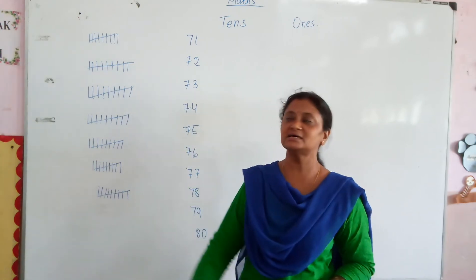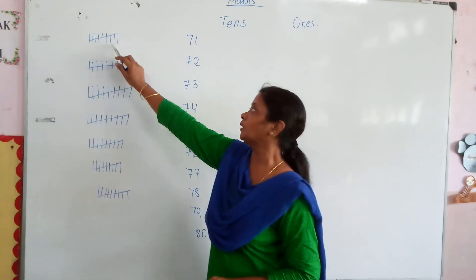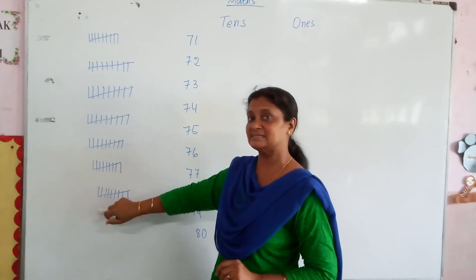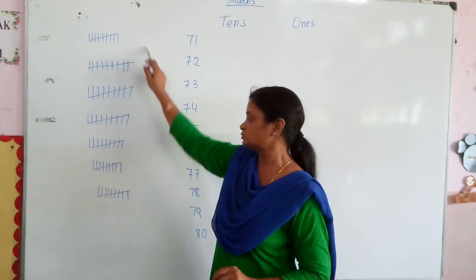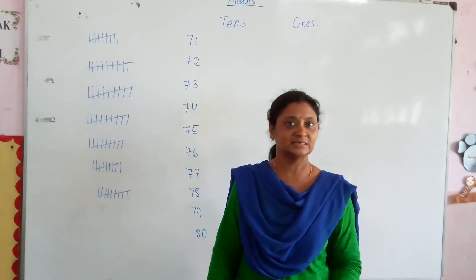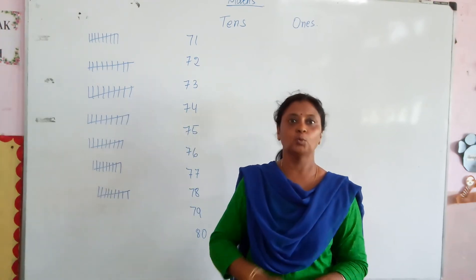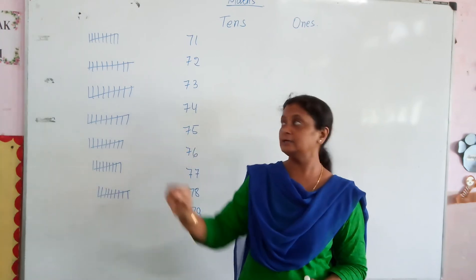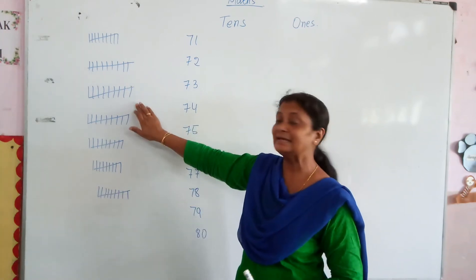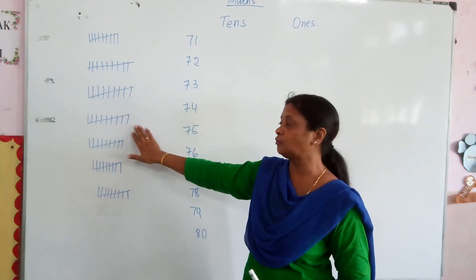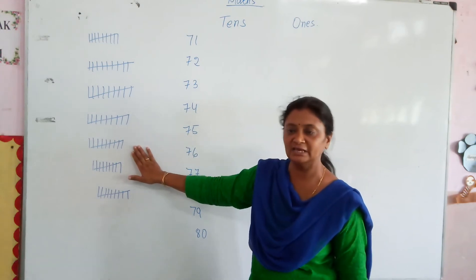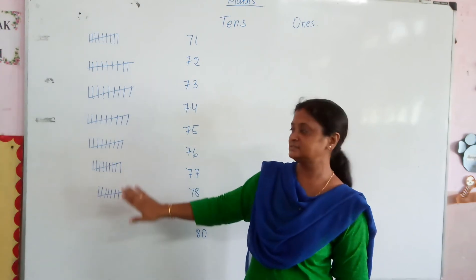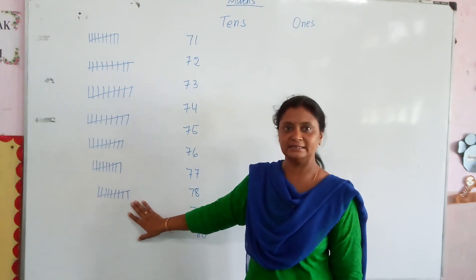And how many 1s are there? 1, 2, 3, 4, 5, 6, 7 — so this means 70. So: 1 bundle is 10, 2 bundles is 20, 3 bundles is 30, 4 bundles is 40, 5 bundles is 50, 6 bundles is 60, and 7 bundles is 70.